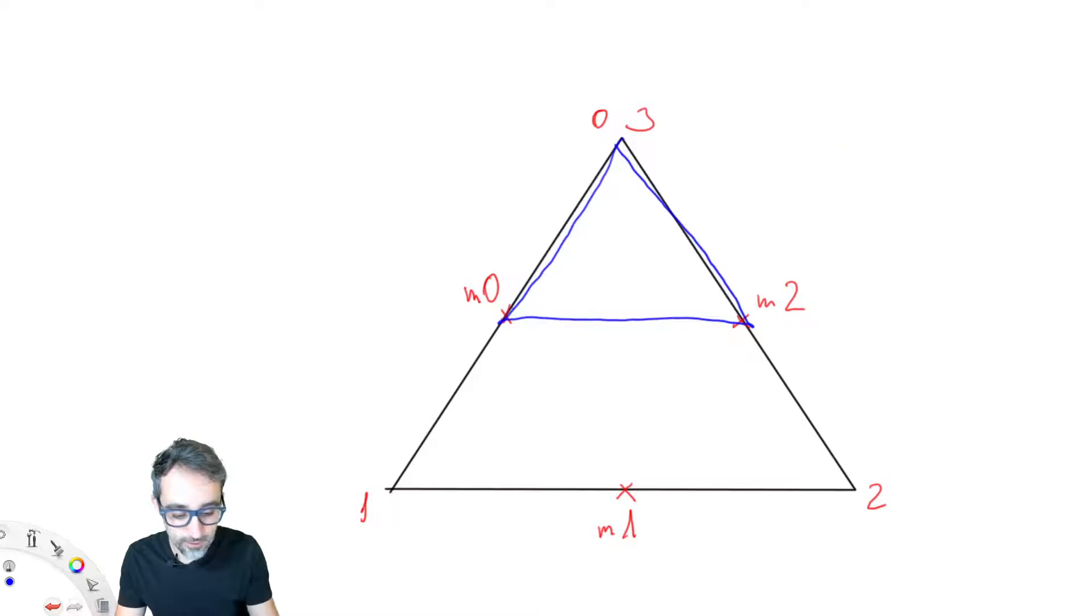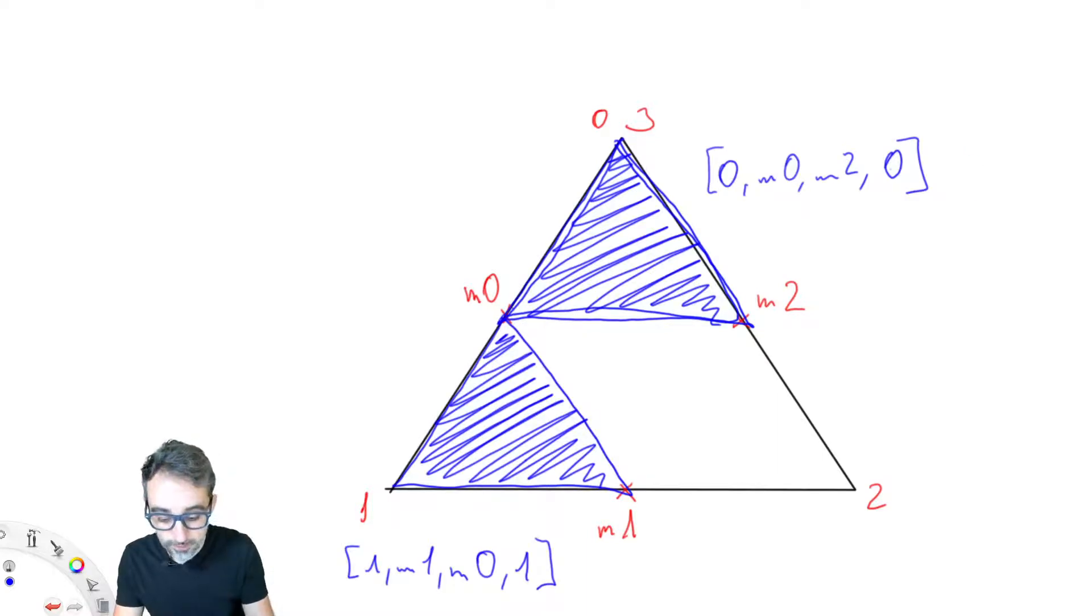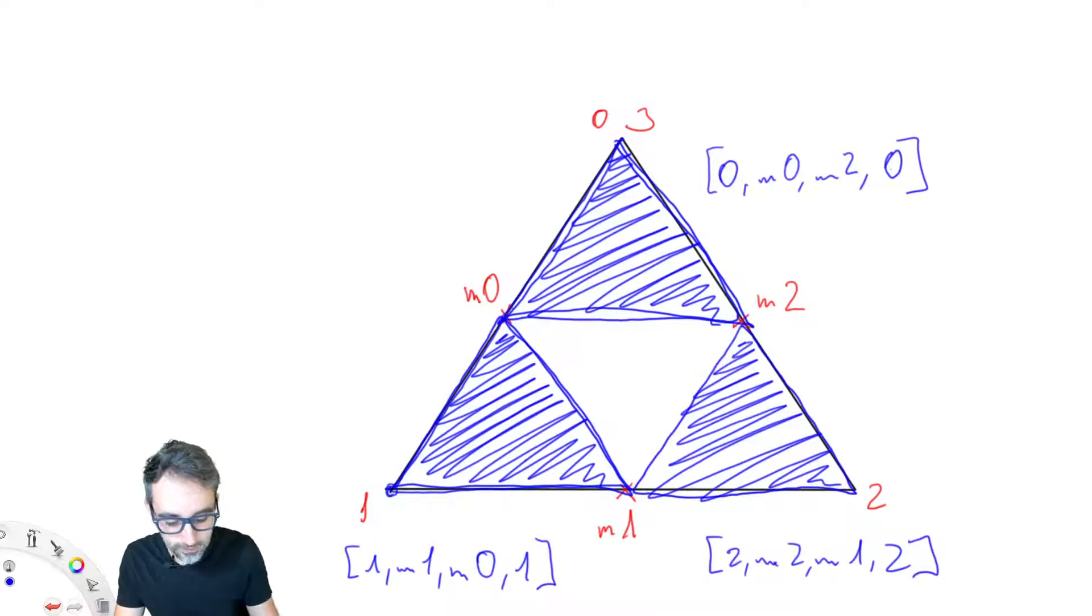The second triangle is going to be very similar, and it's going to be just taking vertex one and joining it with M one, with M zero, and with one. And the third one is going to be taking vertex two and joining with the middle point up to three, the previous middle point, and back into itself.